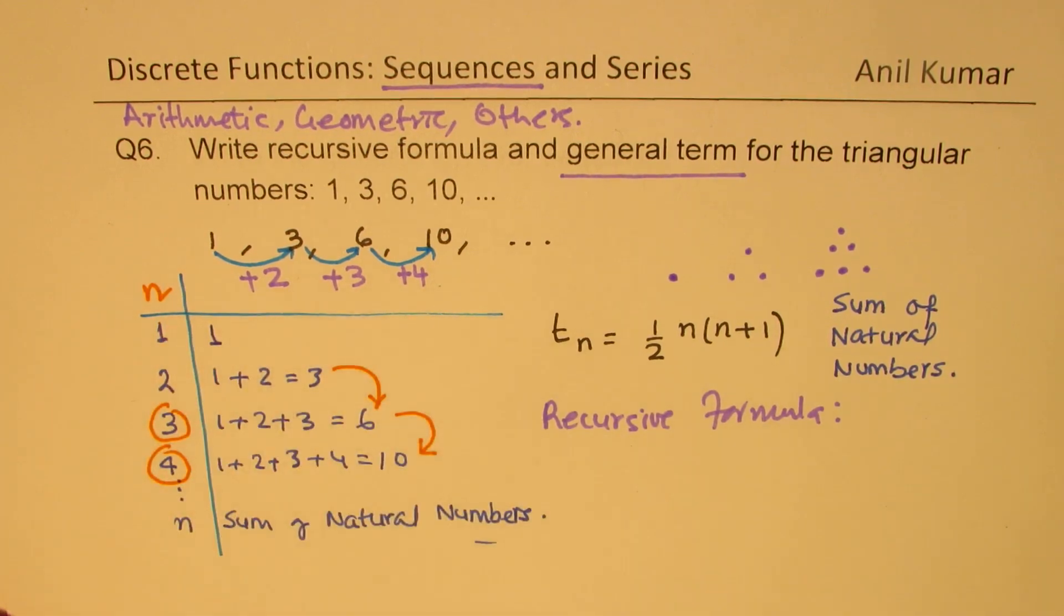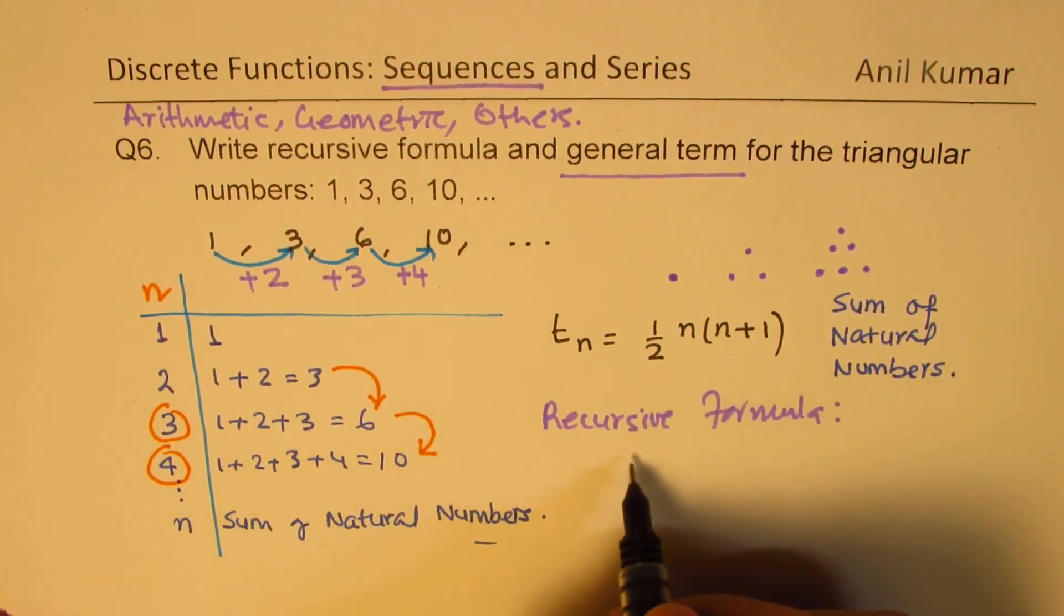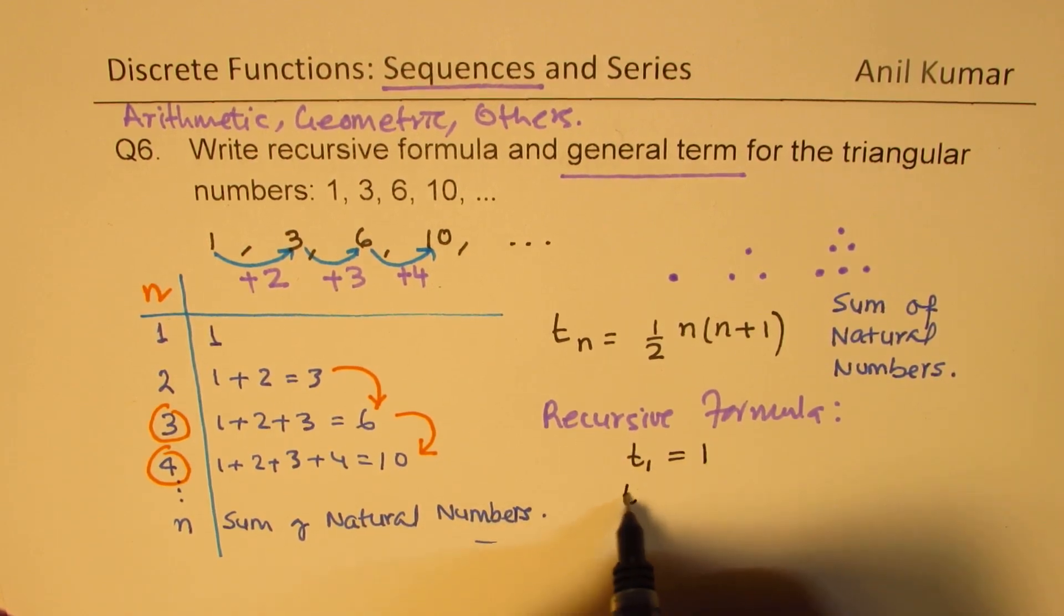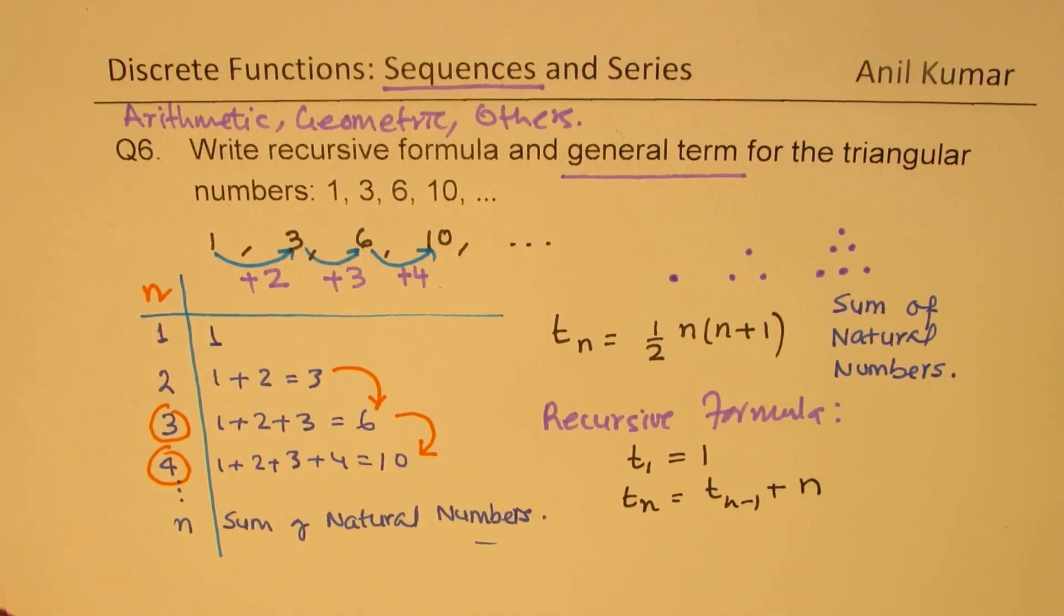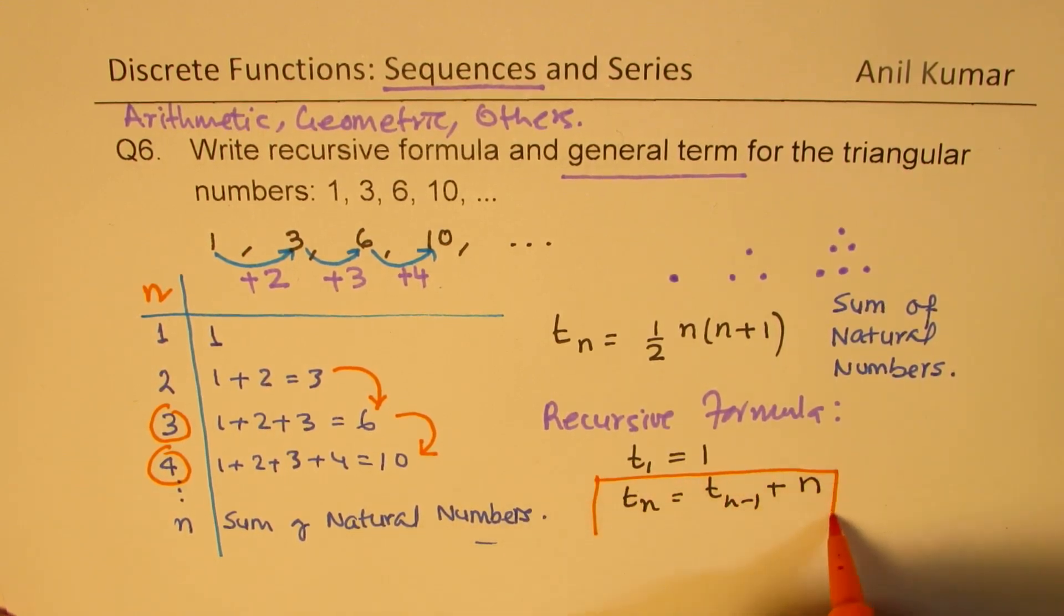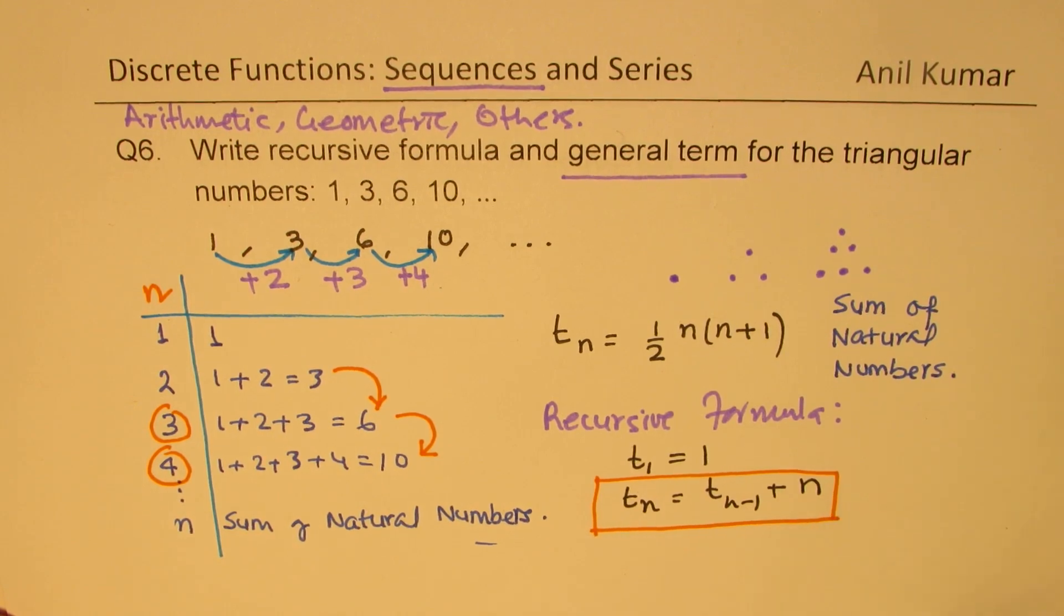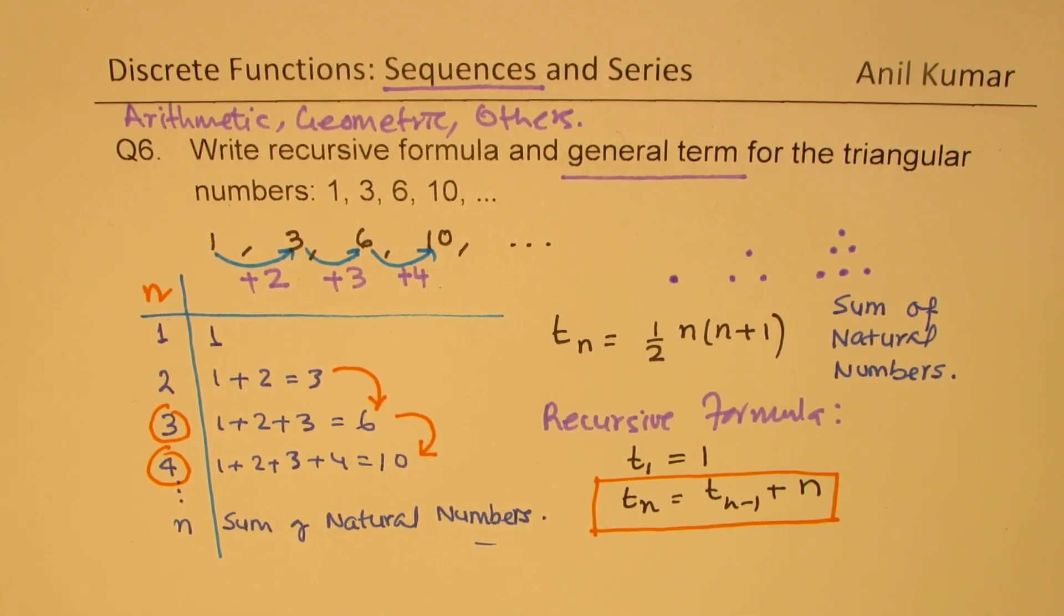So that is how you get it. So we write here recursive formula: if t1 is 1, then tn is tn minus 1 plus n. Do you see that? So that becomes your recursive formula. This is a very beautiful question, extremely important from test point of view. Perfect. So that is how you actually get your recursive formula for the given sequence. Is that clear?